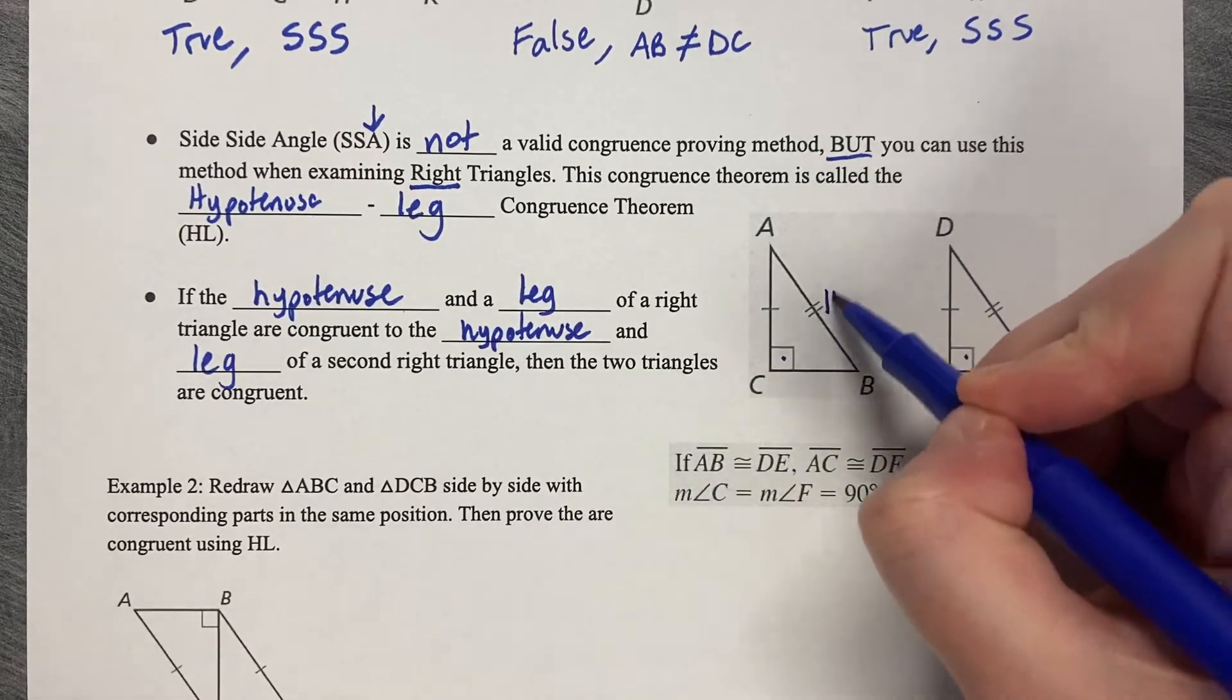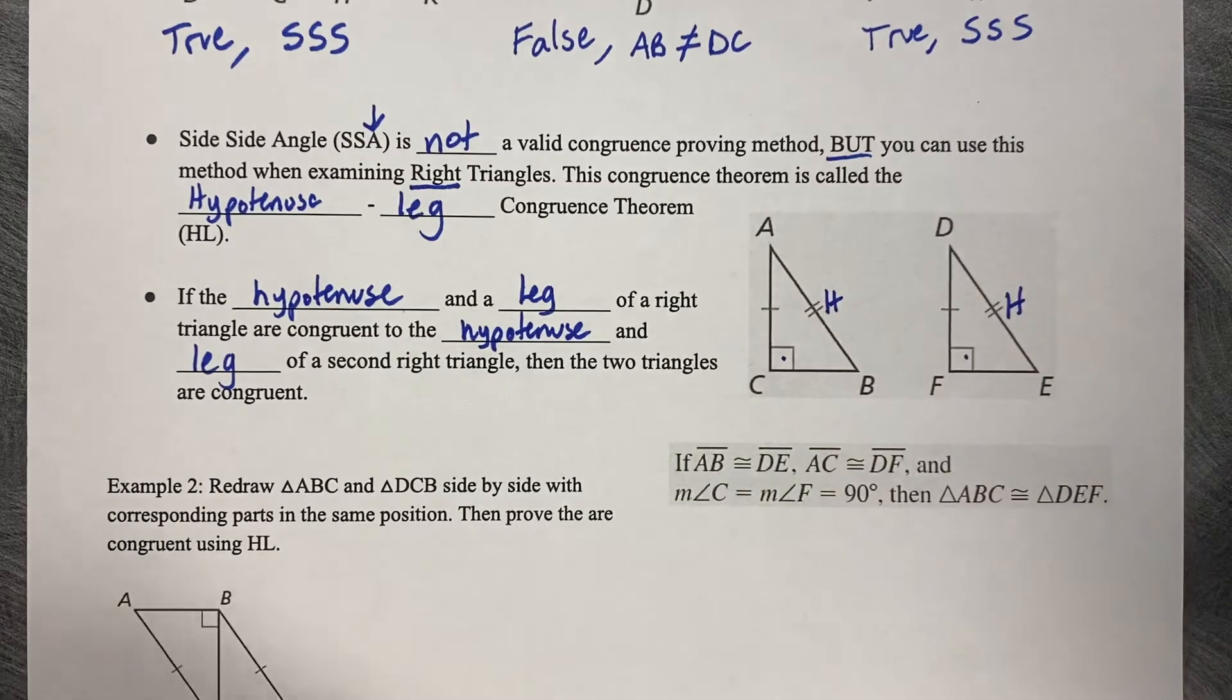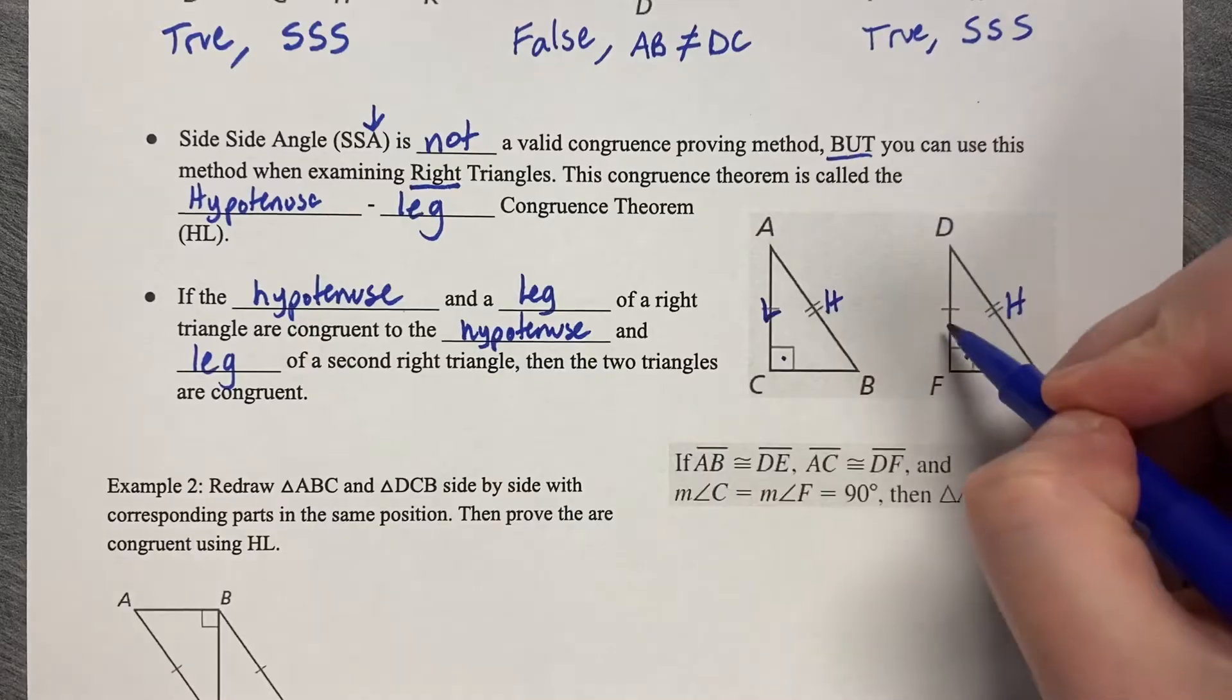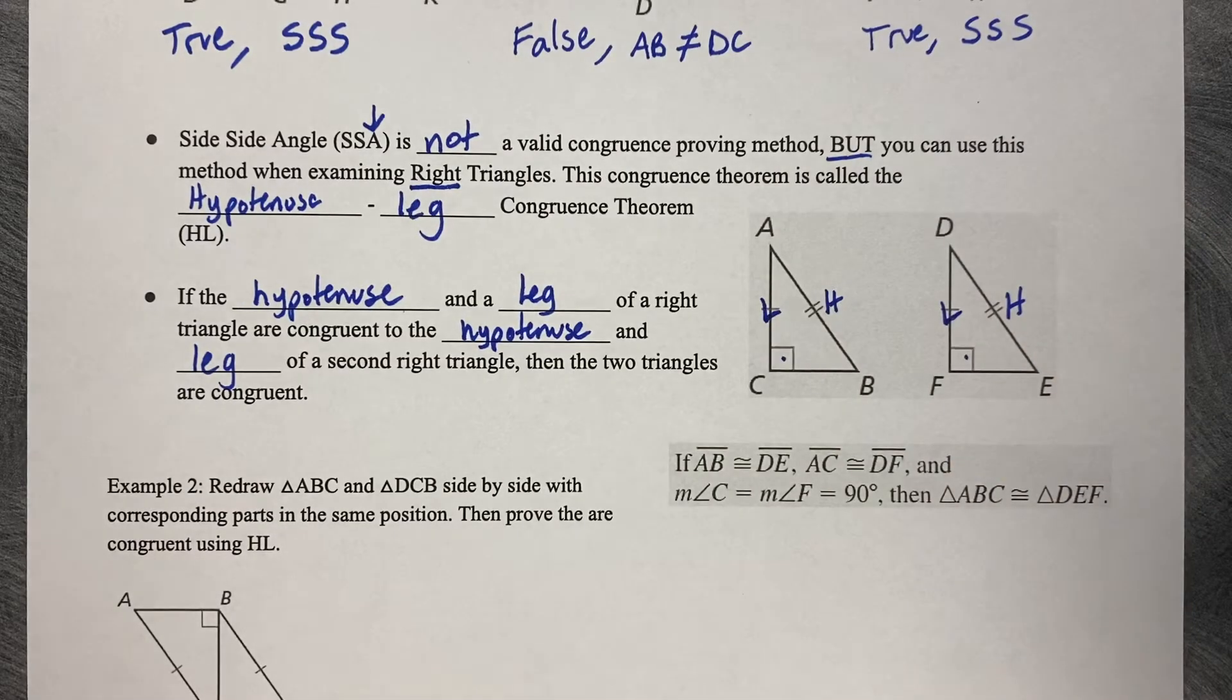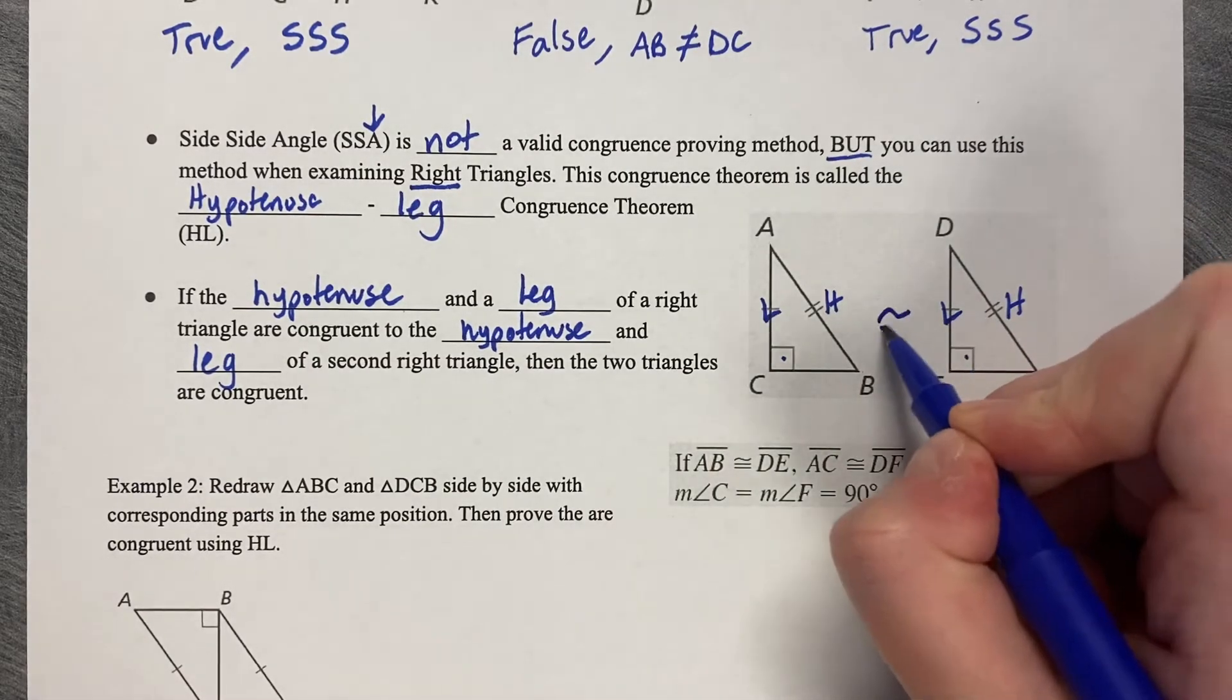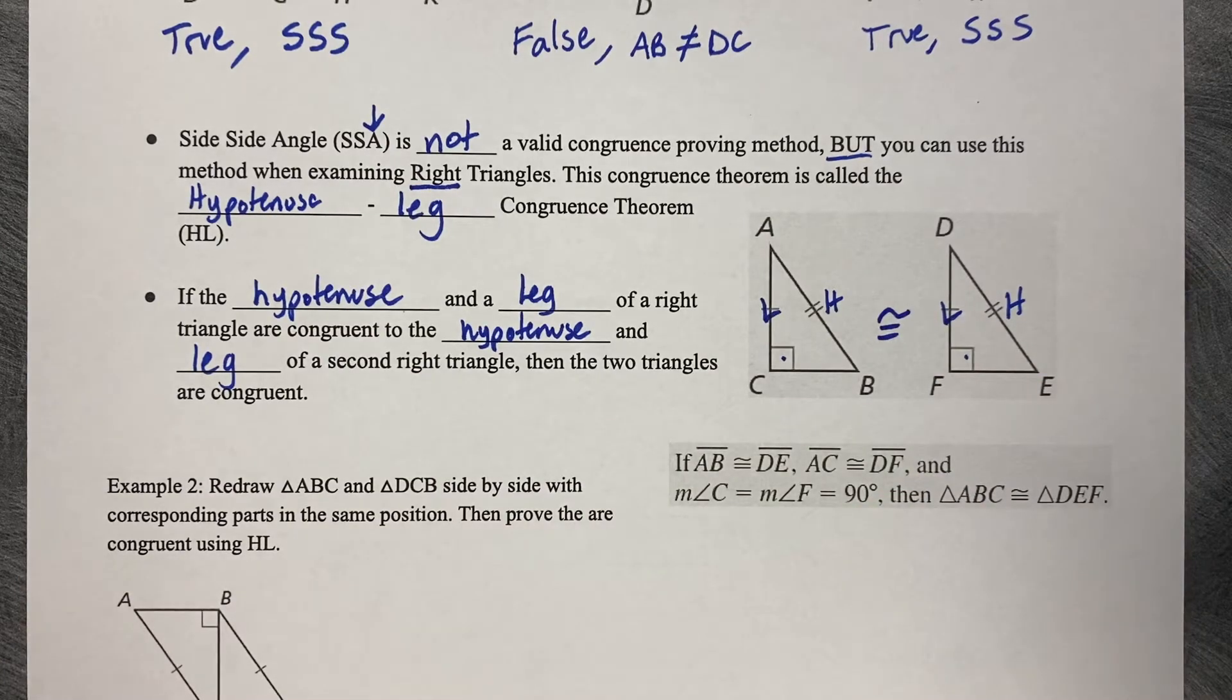I've got a hypotenuse: AD and DE are hypotenuses. And then this single tick mark is the leg. So yes, these two triangles are congruent by hypotenuse leg.